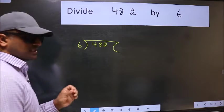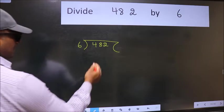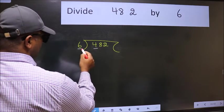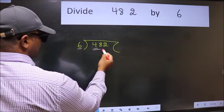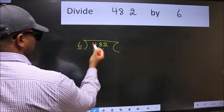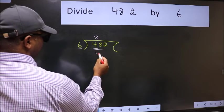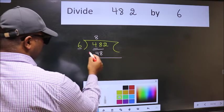This is your step 1. Next, here we have 4 and here 6. 4 is smaller than 6, so take two numbers: 48. When do we get 48 in 6 table? 6 times 8 is 48. Now we should subtract, we get 0.